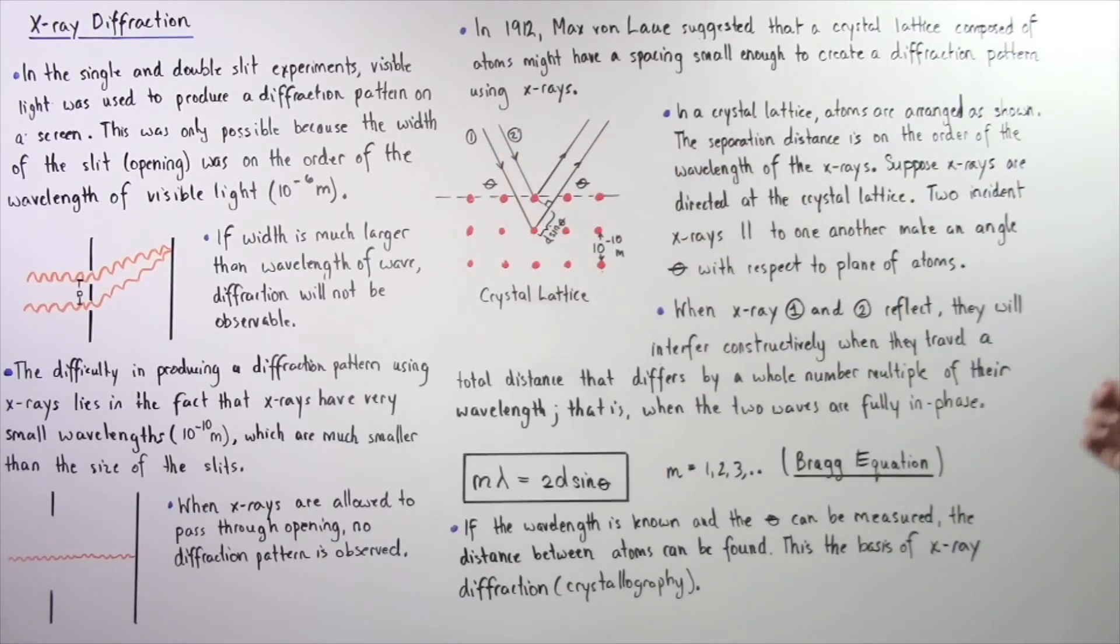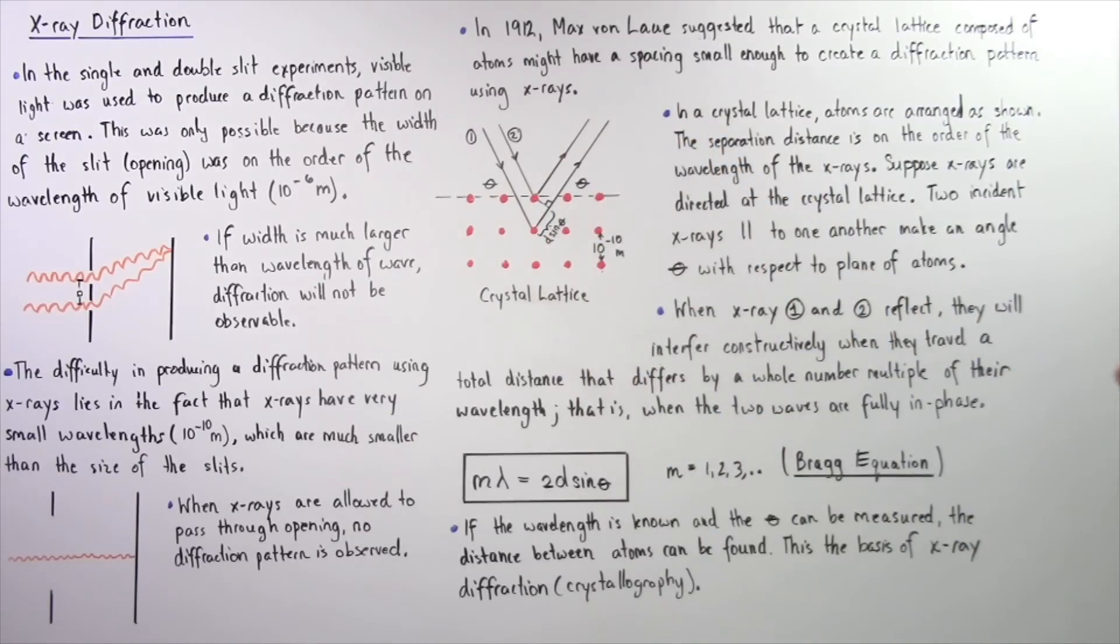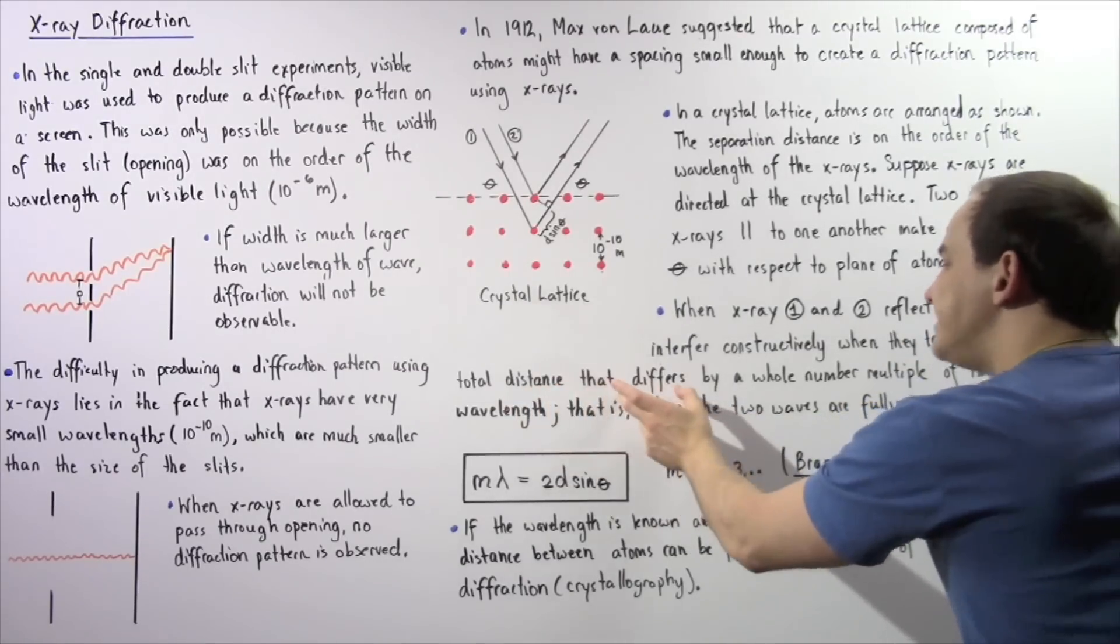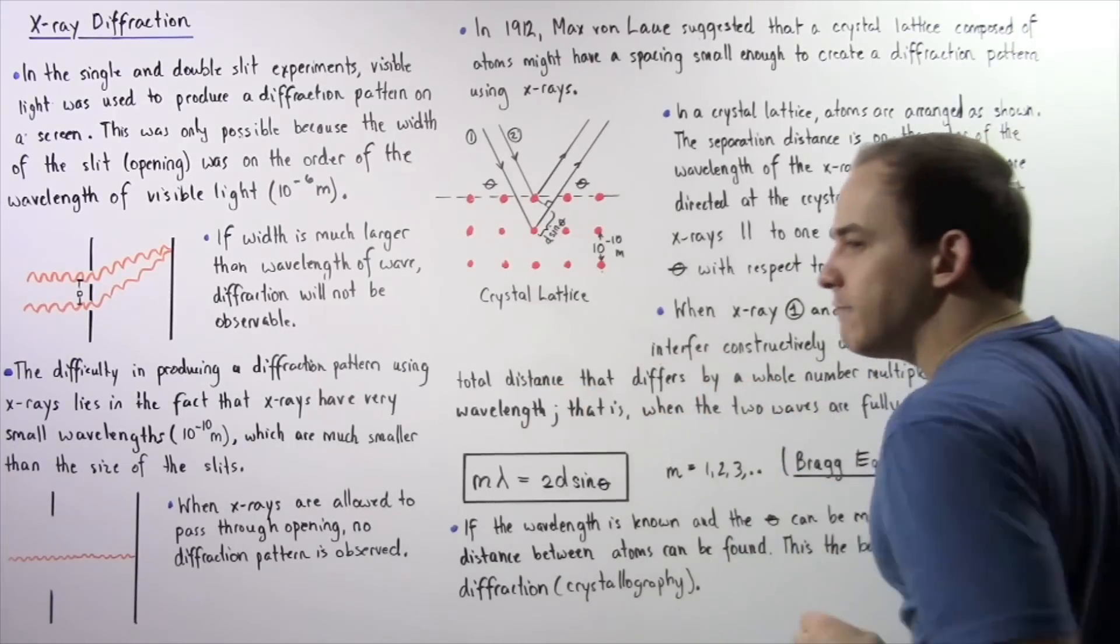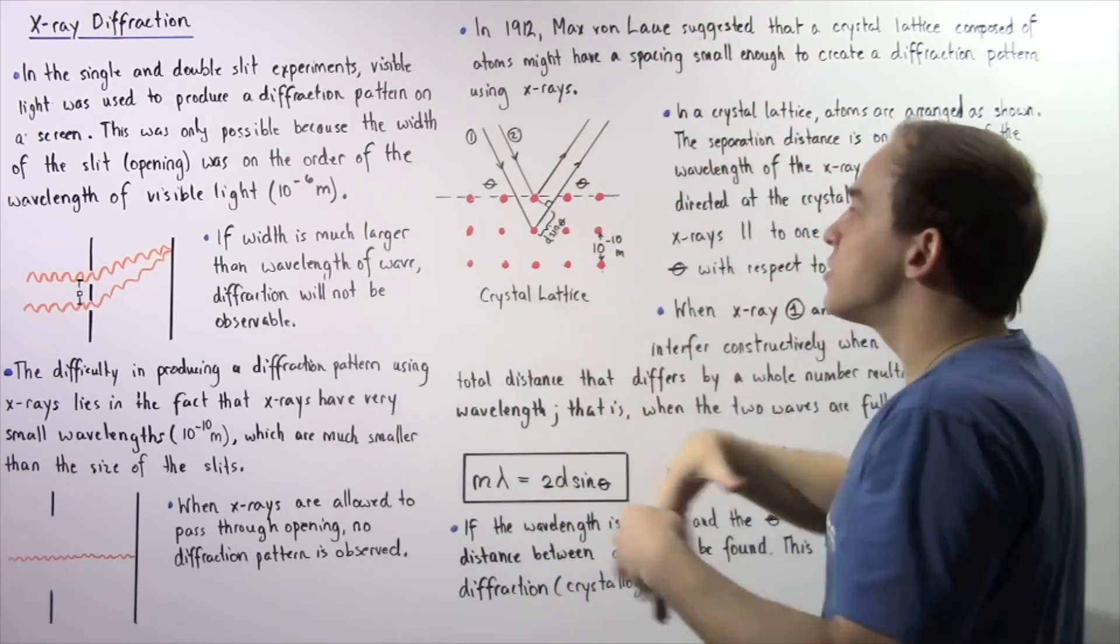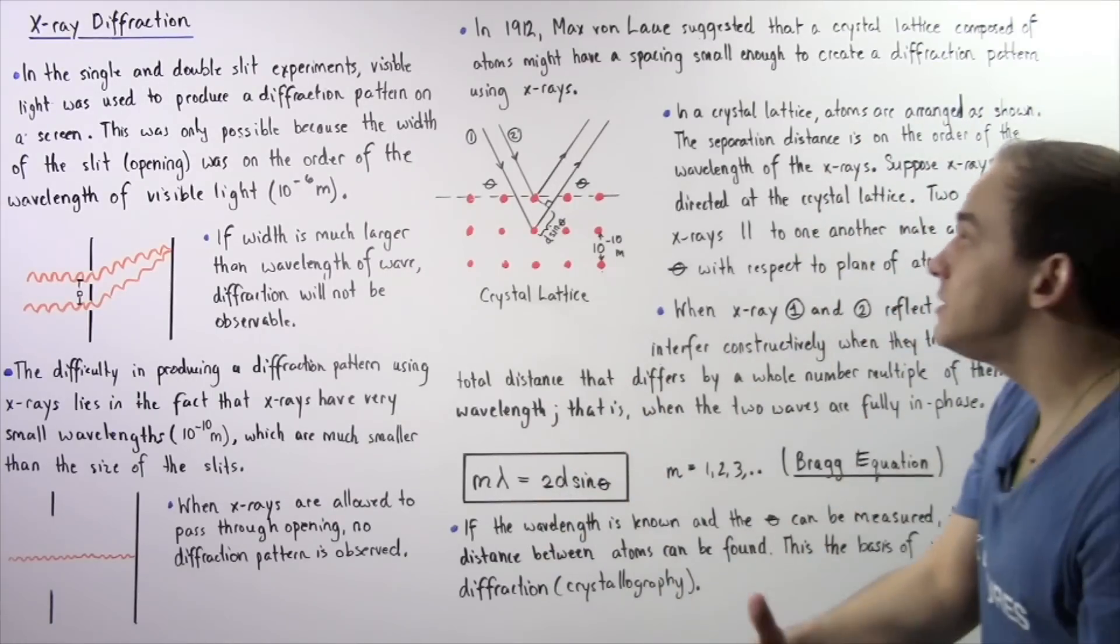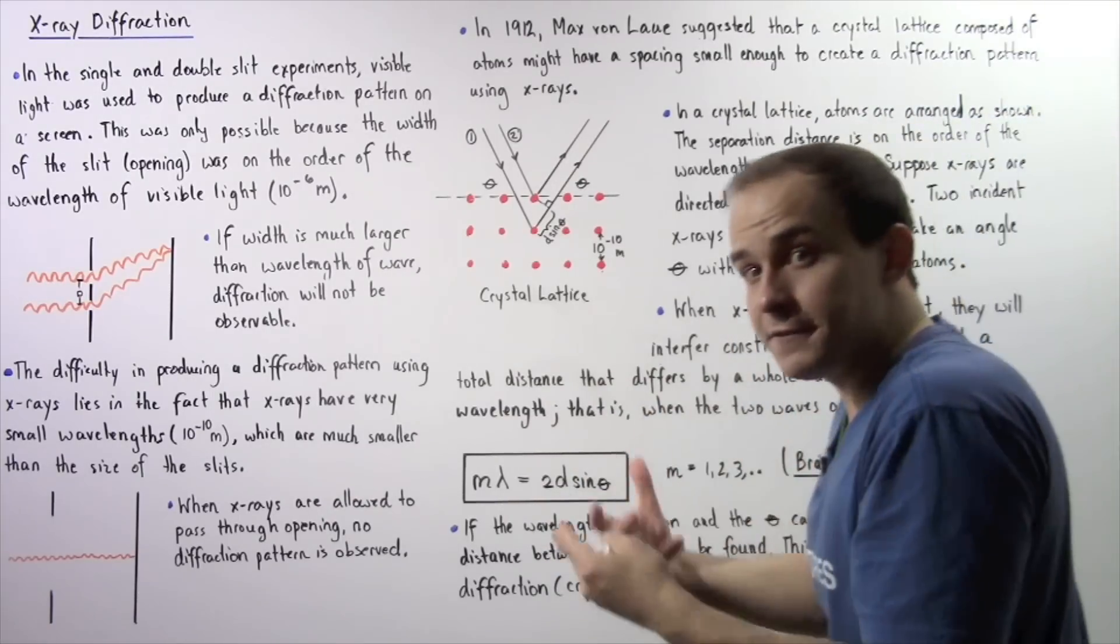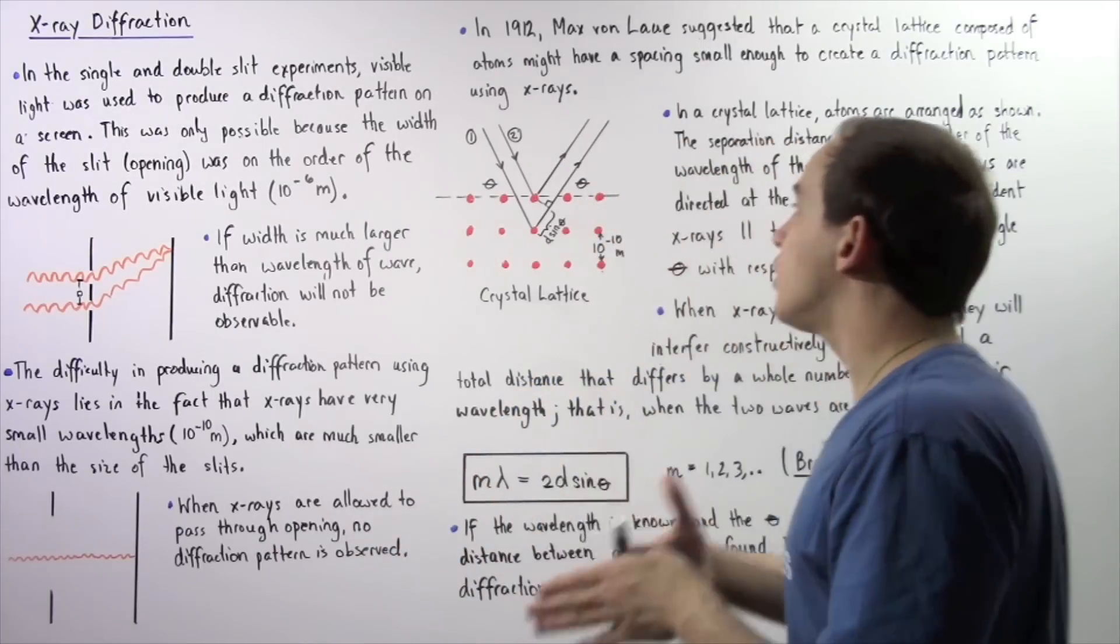When X-ray 1 and X-ray 2 reflect, they will interfere constructively with one another when they travel a total distance that differs by a whole number multiple of their wavelength. These two waves, once they actually reflect, will interfere constructively only if the distance they travel, the difference in that distance, is a whole number multiple of their wavelength.